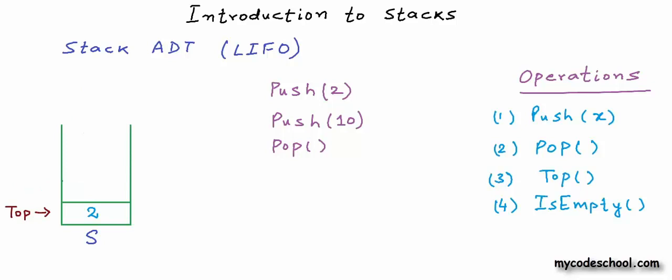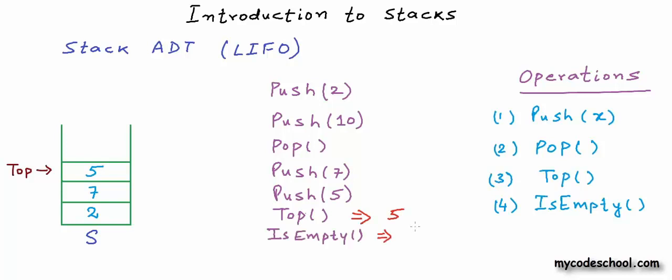Let's do few more push. I just pushed 7 and 5 onto the stack. At this stage, if I will call top operation, it will return me number 5. Is empty will return me false. At this stage, a pop will remove 5 from the stack. As you can see, the element, the integer which is coming last is going out first. That's why we call stack last in first out data structure.